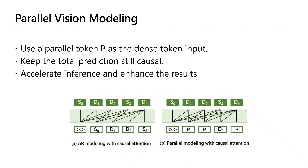We propose parallel vision modeling, which can accelerate inference by predicting a bunch of visual tokens simultaneously. For example, in figure B, we replace the token S0 and D1 with parallel token P as the input of dense tokens D1 and D2. We keep the causal mask so that the model can still generate sparse and dense tokens autoregressively. Furthermore, parallel vision modeling can also improve model performance.